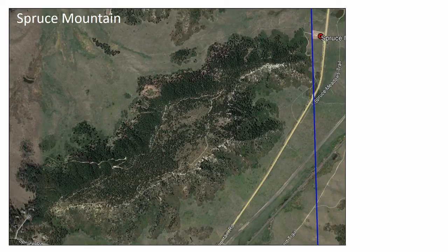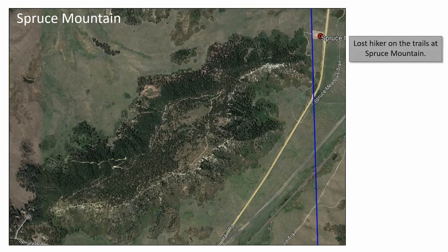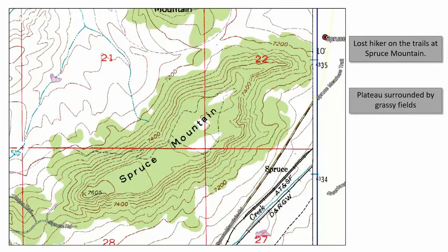The next factor is terrain. For this we're going to use the example of Spruce Mountain, where we have a lost hiker on the trails. This area is a plateau surrounded by grassy fields, and if we take a look at the topo map, we see that it starts out at 7,200 feet down below and rises all the way to 7,600 feet at the top of the plateau.